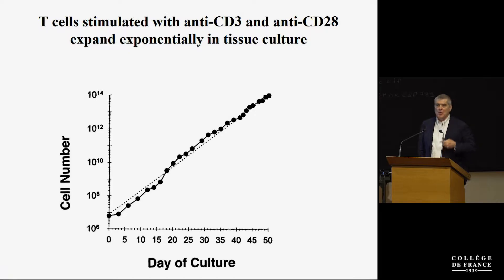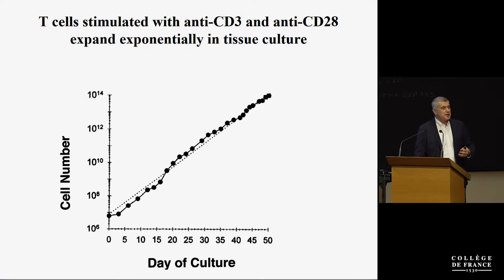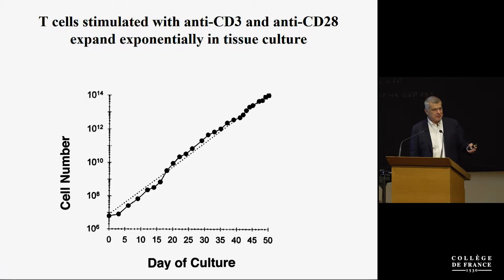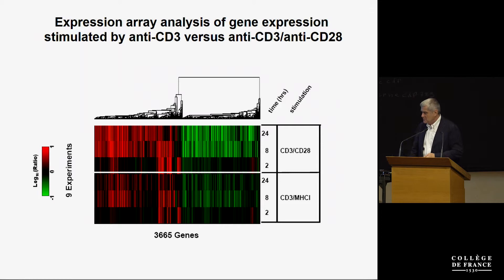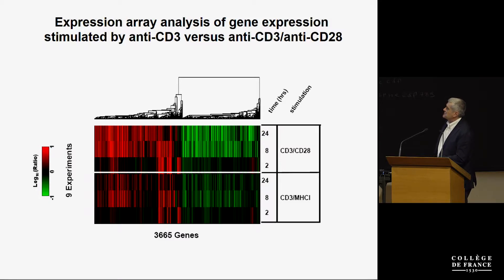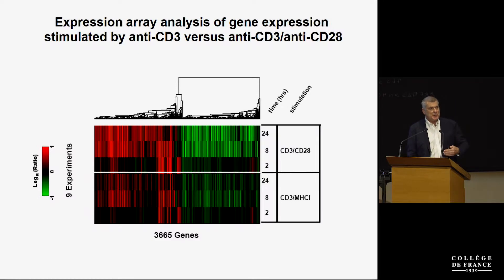Carl was really excited about the idea that co-stimulation would unmask a new transcriptional profile. Many people had studied T cell receptor signaling and saw it turned on many genes. So we asked: what happens when you stimulate with CD28? We got nothing on gene expression arrays. Then we did the combination and found over 3,665 genes turned on when you cross-link the T cell receptor on a polyclonal population of T cells — some going up, some going down. About 15% of your genome changes in a meaningful way.